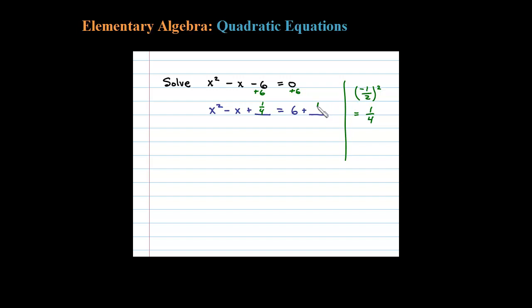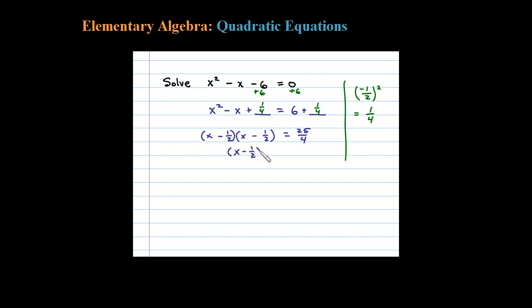To make this a perfect square, I'm going to add 1/4 to both sides. Factoring the left side, I get (x minus 1/2) squared — since 1/2 times 1/2 is 1/4, and negative 1/2 plus negative 1/2 is negative 1. On the right side, 6 plus 1/4 is 25/4. That leaves us with (x minus 1/2) squared equals 25/4.